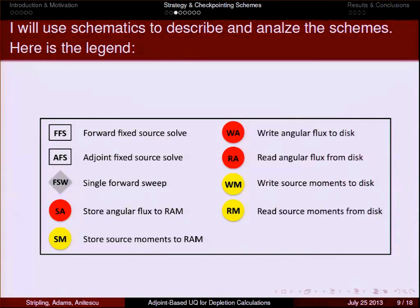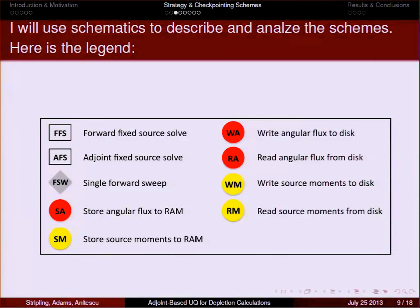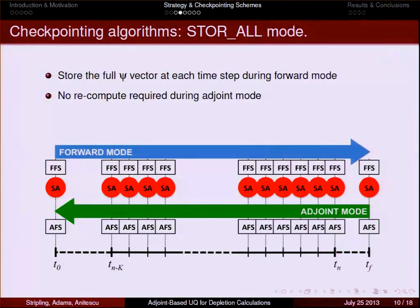I'm going to go through a series of schemes using consistent symbols. FFS and AFS denote a forward fixed source solve and an adjoint fixed source solve — the bulk of the computing cost. FSW is a single sweep; there may be a couple hundred sweeps per full fixed source solve, so sweeps are computationally less expensive. The memory operation symbols are: red circle with SA — cost to store the angular flux to RAM; SM — cost to store the source moments to RAM; and corresponding symbols for reading and writing those data from file.